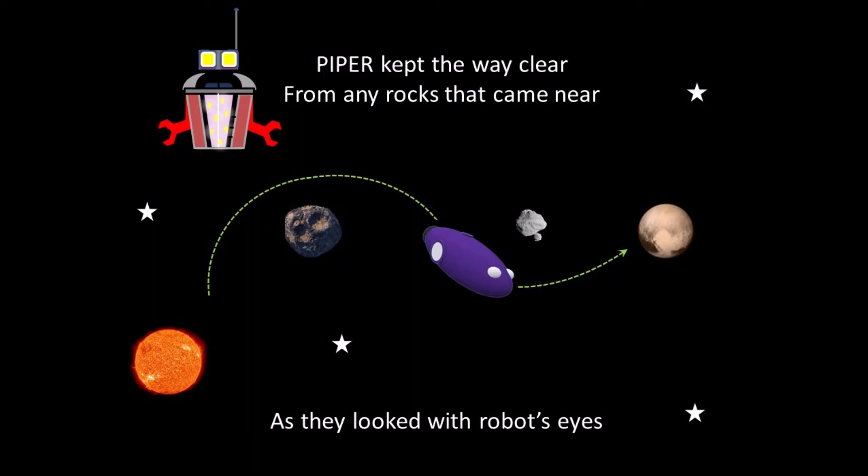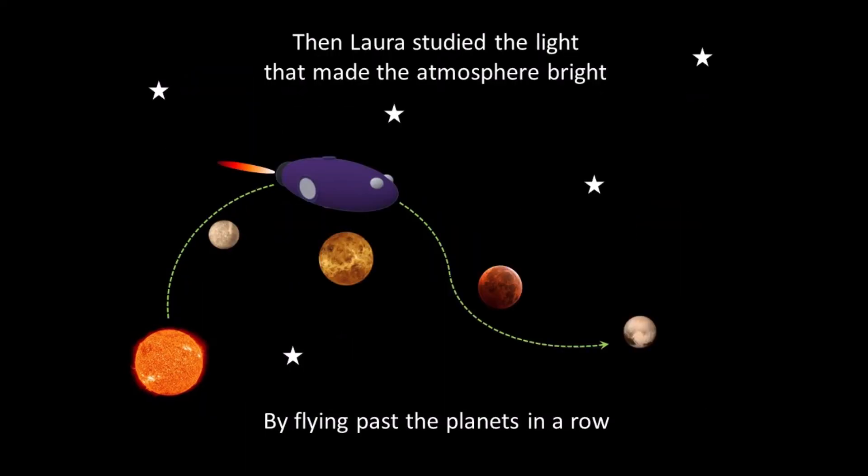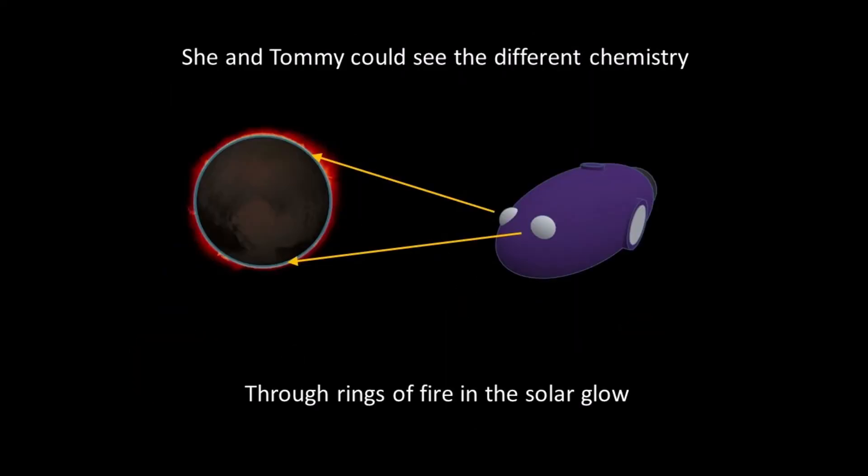Then Laura studied the light that made the atmosphere bright by flying past the planets in a row. She and Tommy could see the different chemistry, the rings of fire in the solar glow.